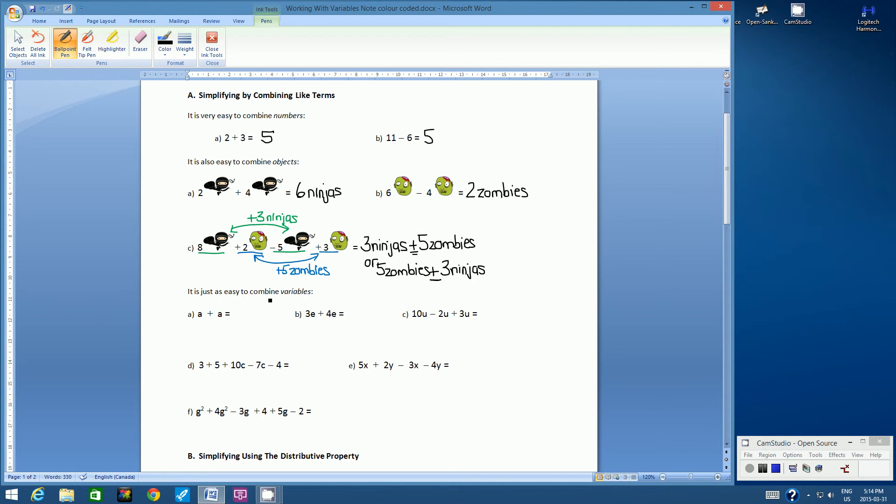So it is just as easy to combine variables. Now, when we're talking about algebra, we always hear this word variables. Variables can be any letter of the alphabet, and it represents an unknown value. So if we have 1a plus 1a. Now, whenever you just see a letter alone, it's 1 in front of it. That's kind of invisible. So if we were to substitute a for another common letter word, such as apple. We have 1 apple plus 1 apple. And that, of course, is 2a, or 2 apples. Now, in between the 2 and the a, there is a hidden but invisible multiplication symbol. This is actually 2 times a that we write as 2a.